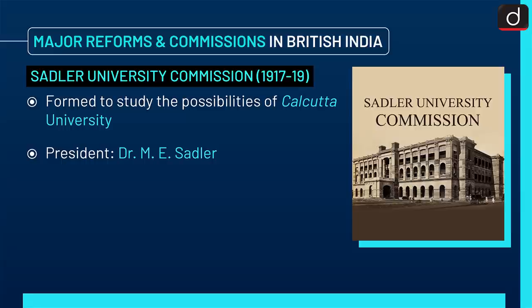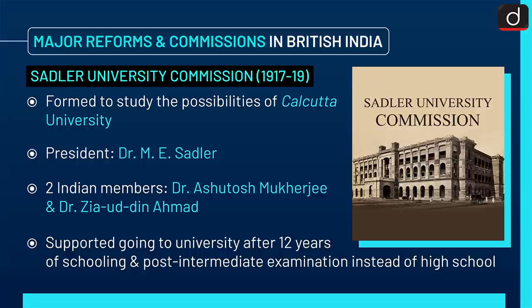Next is the Sadler University Commission 1917-19. It was formed to study the possibilities of Calcutta University. The president was Dr. M. E. Sadler. Two Indian members were Dr. Ashutosh Mukherjee and Dr. Zia Uddin Ahmed.